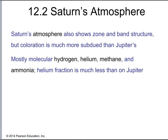Like Jupiter, Saturn is a gas giant with a similar chemical composition. There are some variations — the coloration is more subdued and doesn't have as much coloration as Jupiter does. The constituents differ as well: there's a much lower fraction of helium in the atmosphere of Saturn than there is on Jupiter.